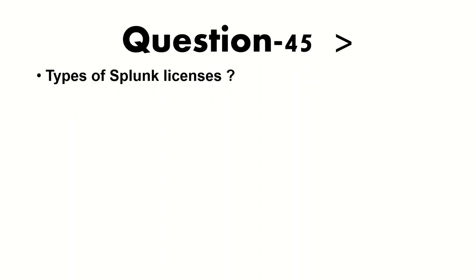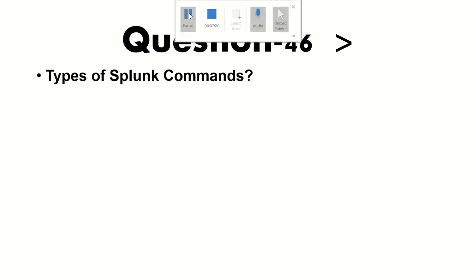What are the types of Splunk commands? The types are: distributable streaming, centralized streaming, transforming streaming, generating streaming, orchestrating, and dataset processing commands.